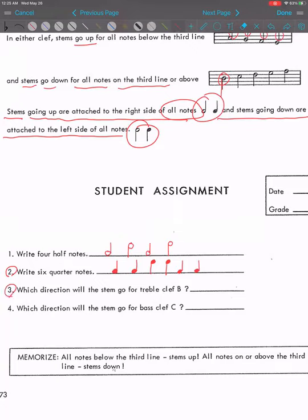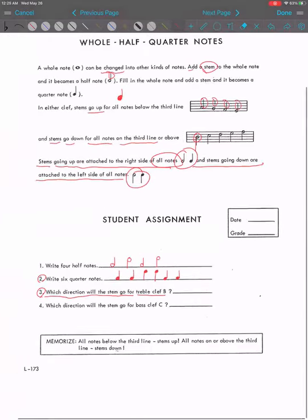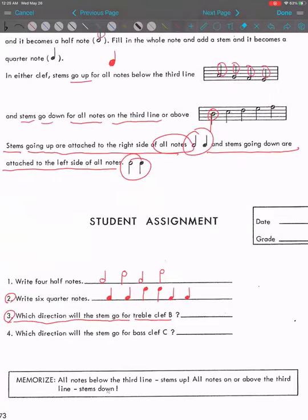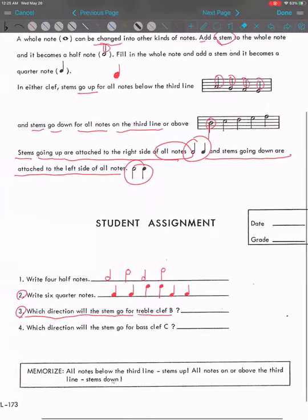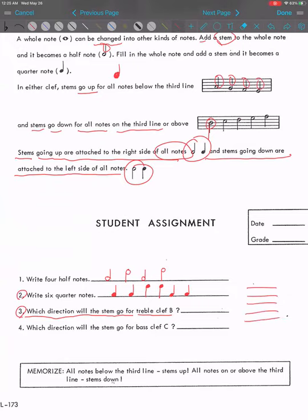Number three, which direction will the stem go for treble clef B? Here they mean the B inside the staff, because if you are more advanced, you will know there are many Bs on the staff. But they're talking about the B that looks like here, this B. So B is right in the middle. So we talked about that earlier. The stems will go down for all notes on the third line or above. So here the stem will go down.